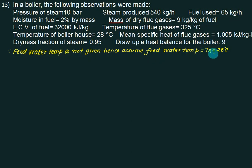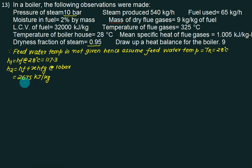So h1 equal to hf at 28°C. Then you need to calculate h2. Your steam is wet at a pressure equal to 10 bar and dryness equal to 0.95. h2 equals hf plus x·hfg at 10 bar with x equals 0.95. The answer is 2675 kJ/kg. So we need only two calculations for the enthalpies.